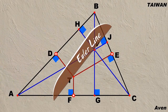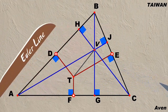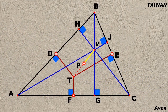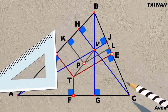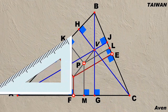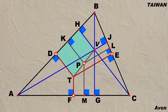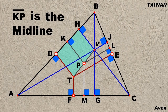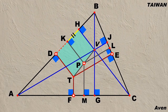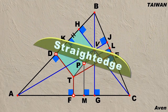First, let us construct Euler's line T-V, and find the midpoint P of the Euler line. Now draw three segments at point B perpendicular to the three sides of triangle ABC. Here we can see a green trapezoid. Since line segment KP is parallel to DT, segment KP is therefore the midline of the green trapezoid. Thus, the length of DK is equal to KH.